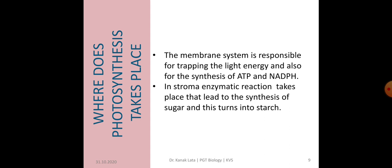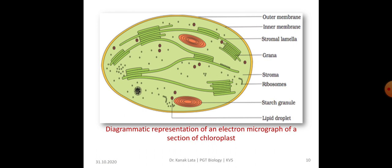Means, different types of reactions are taking place with the help of different enzymes. As a result of which, there is synthesis of sugar, which in turn forms starch. It is the diagrammatic representation of an electron micrograph of a section of chloroplasts. You may observe here the outer and inner membrane, stroma lamellae, granum and stroma.